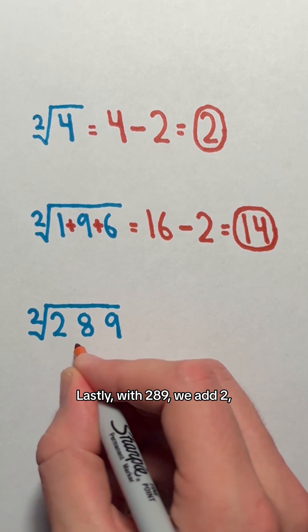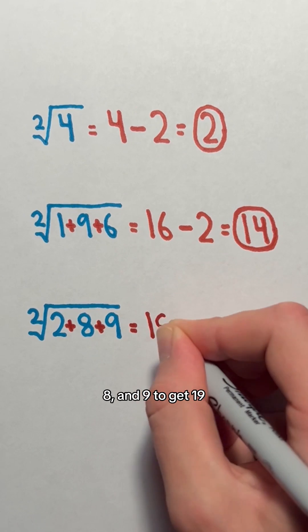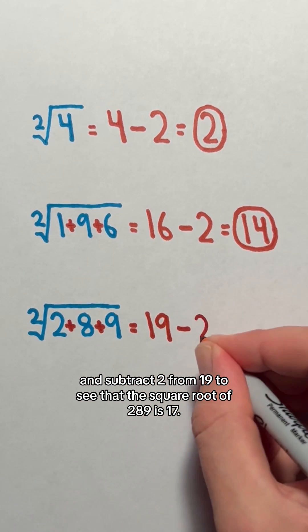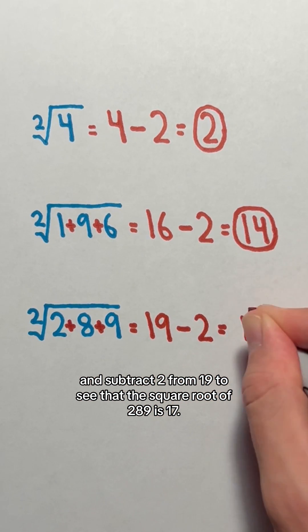Lastly with 289, we add 2, 8, and 9 to get 19, and subtract 2 from 19 to see that the square root of 289 is 17.